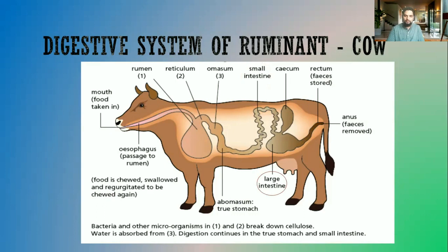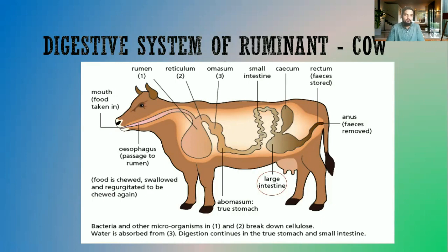Moving on to the large intestine — but first, remember that the last section of the small intestine is called the ileum. In the ileum, final digestion occurs. Any remaining undigested food — some starch, proteins, and fats — will be digested, as enzymes produced in the ileum ensure whatever is undigested gets broken down into simpler substances. Importantly, absorption also takes place in the ileum: whatever nutrients have been fully digested are absorbed through the walls of the ileum.